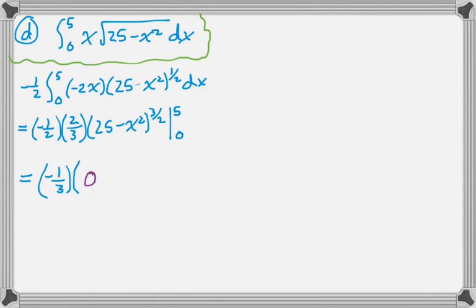Minus, when I plug in 0, I get 25 to the 3/2. So the square root of 25 is 5. If I cube that, I get 125. So minus 125. And then that simplifies to 125 over 3.